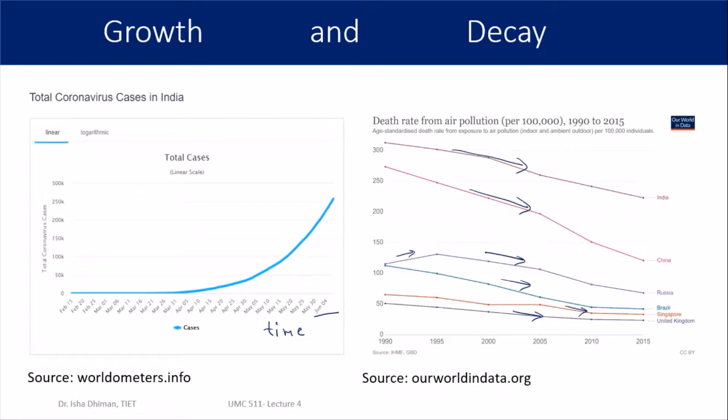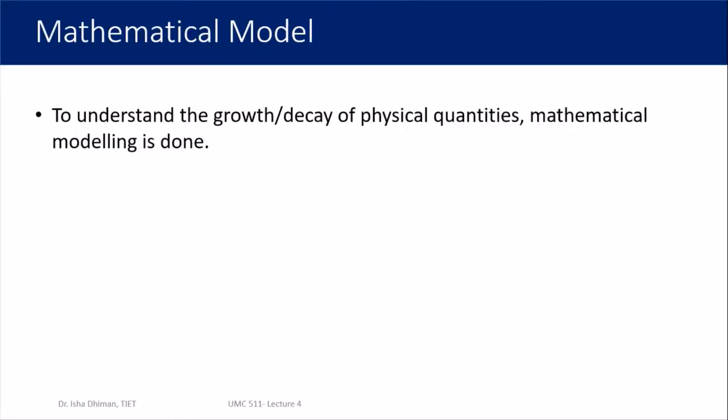Now the next thing is we want to mathematically understand these phenomena. We don't just want to look at the data and get an interpretation — we want to understand why something is growing or decaying, how fast or how slow that growth or decay is. To analyze the rate at which growth and decay is happening, we need a proper mathematical model. The purpose is to understand the processes in detail: their reasons and their consequences.